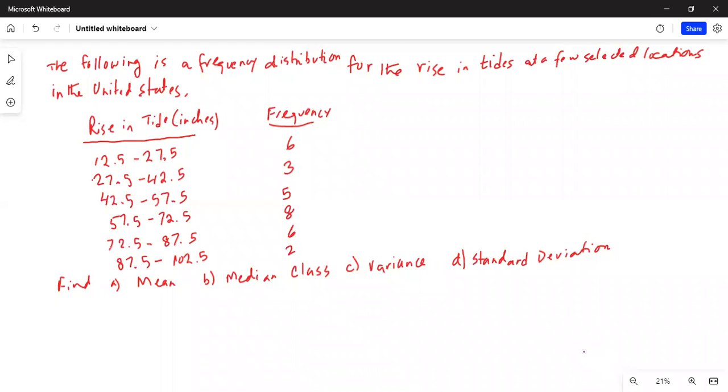I'll share my computer screen with you. The following is a frequency distribution for the rise in tides at a few selected locations in the United States. We have two columns of data: rise in tide in inches and frequency. We have been asked to find mean, median class, variance, and standard deviation.